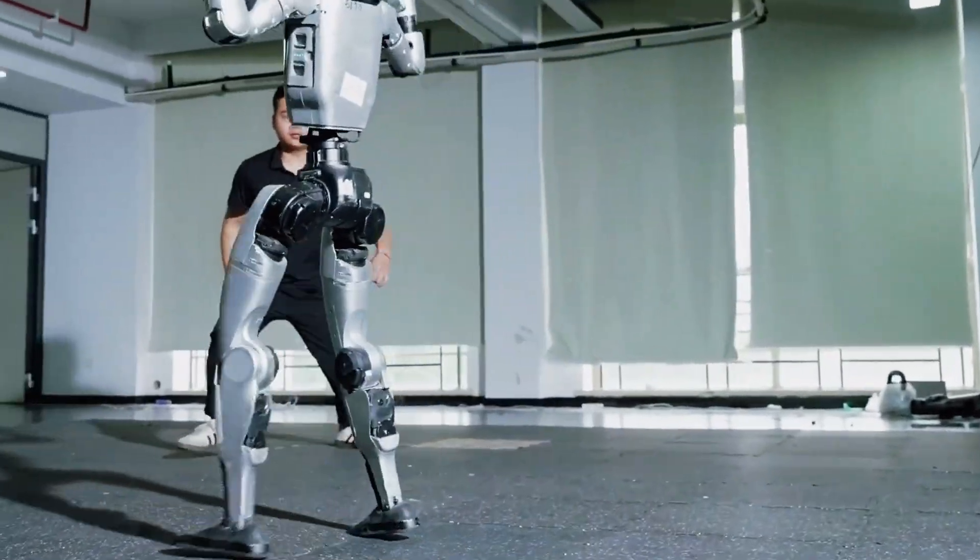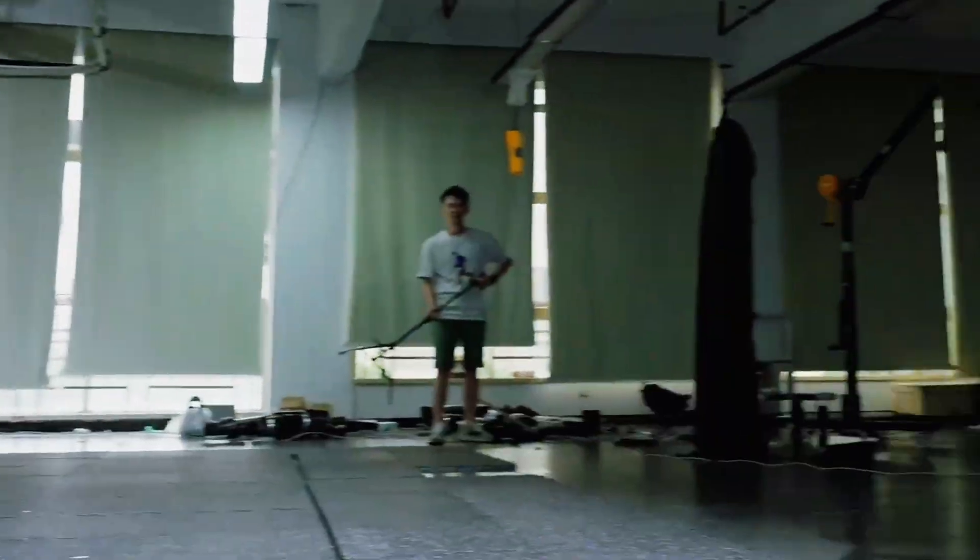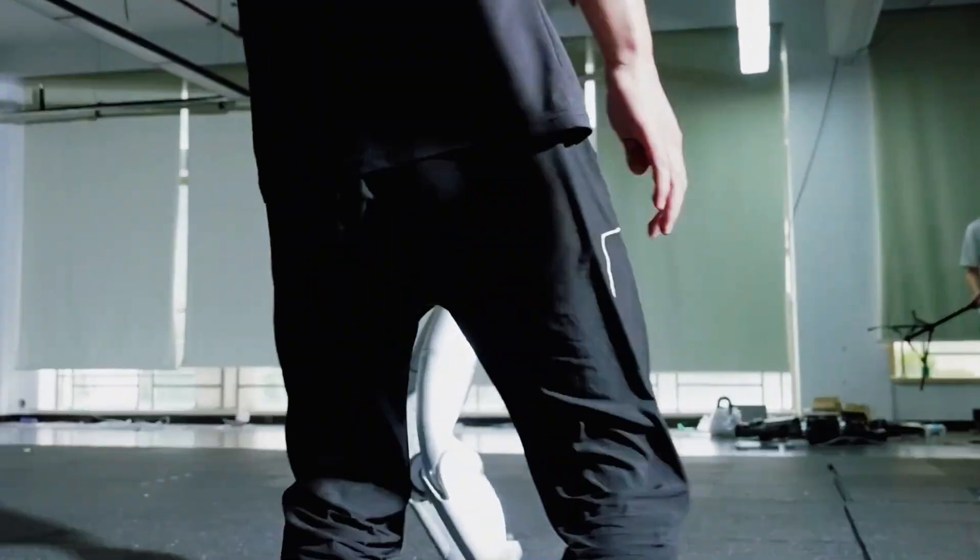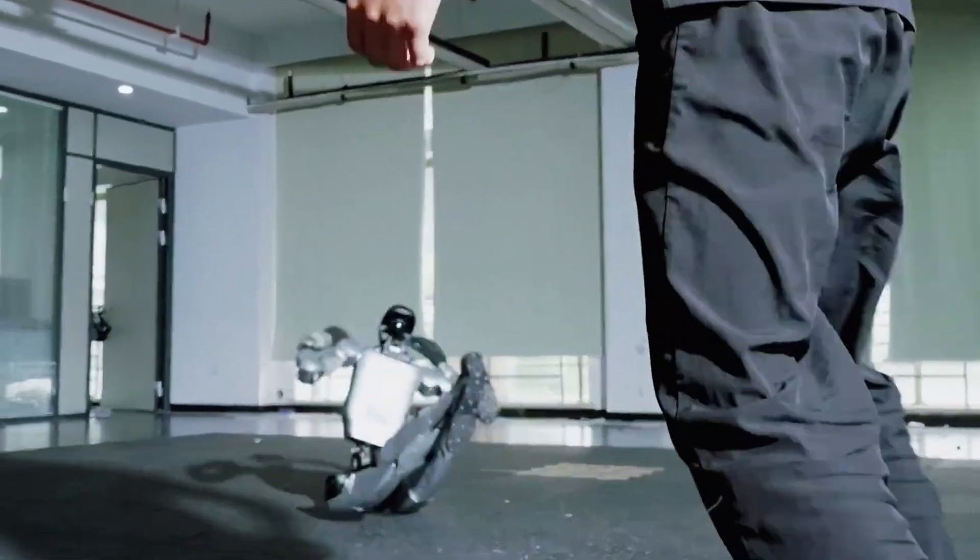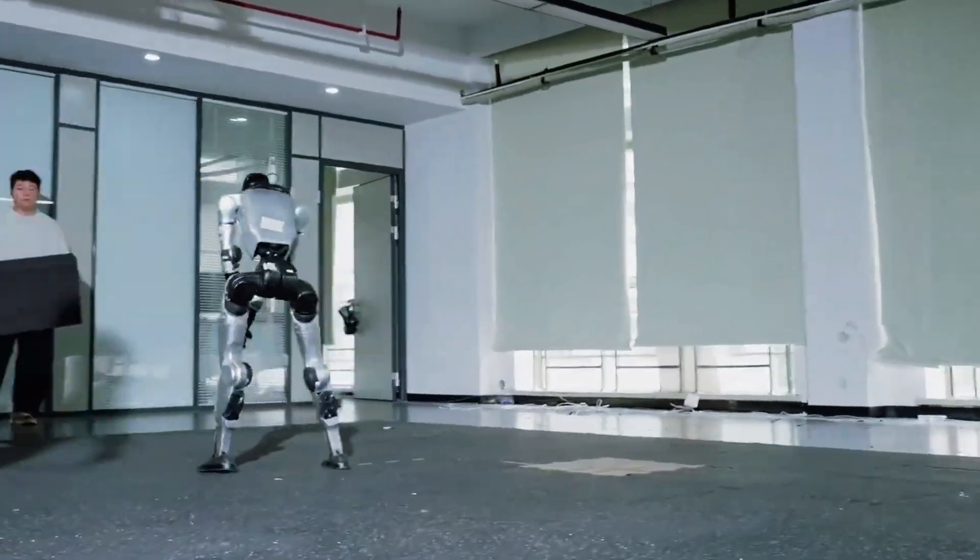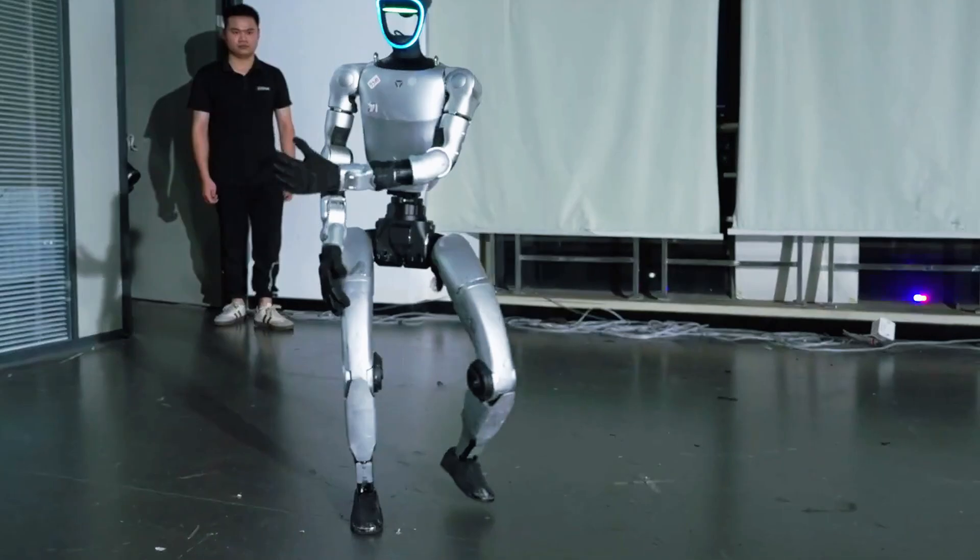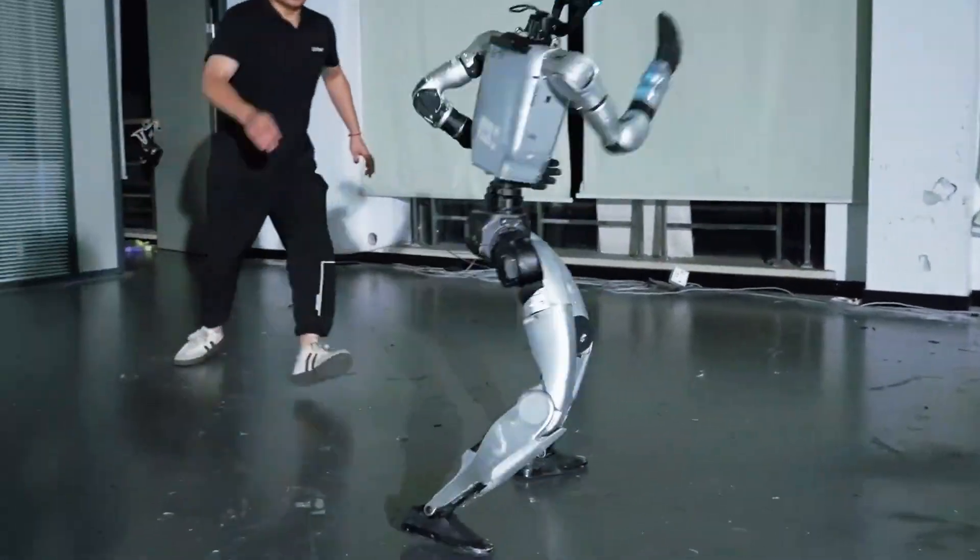And here's the kicker. While it's doing all that, the G1 has unlocked something called anti-gravity mode. Basically, you can shove it, spin it, or try to trip it, and it just shrugs it off like gravity doesn't apply. The thing plants itself like it's nailed to the floor.